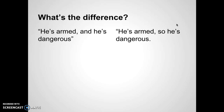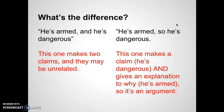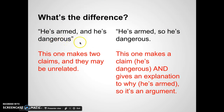Take a look at these two claims. What's the difference between saying 'he's armed and he's dangerous' versus 'he's armed, so he's dangerous'? The first makes two claims that may be unrelated. He's armed, he's dangerous — but maybe the reason why he's dangerous is completely different than the reason why he's armed. They don't necessarily have to be logically connected. The word 'and' does little to connect the two logically.